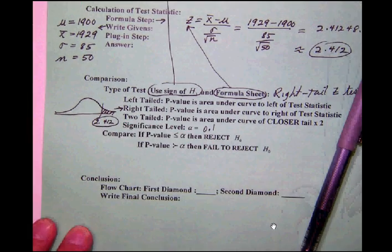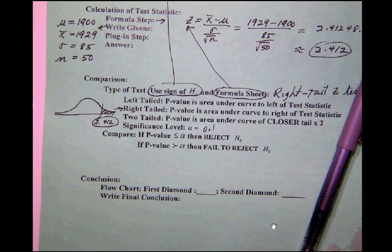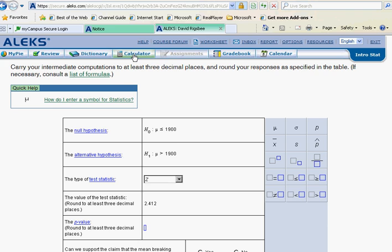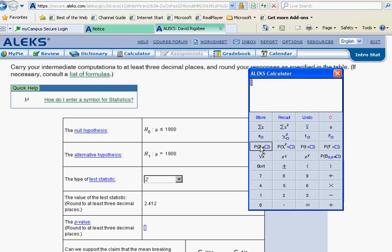Well, that's easy to do in Alex because what they're asking us to do then is to simply calculate the p of z. So we go over to Alex. We grab our p of z button up, but we notice the p of z button likes the area to the left. So we're going to go 1 minus the p of z of 2.412.